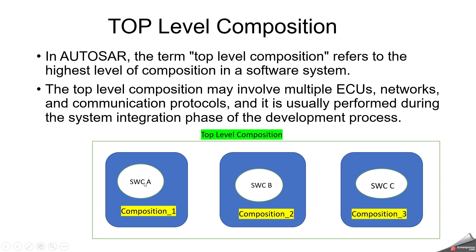This is a top level composition — it has multiple compositions, and each composition has multiple software components. Here, the top level composition contains Composition 1, Composition 2, and Composition 3. Composition 1 has Software Component A, Composition 2 has Component B, and Composition 3 has Component C. The top level composition refers to the highest level of composition in a software system.